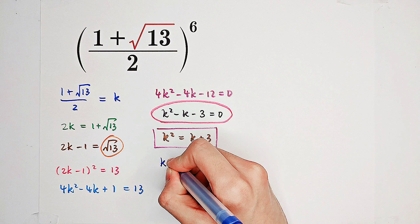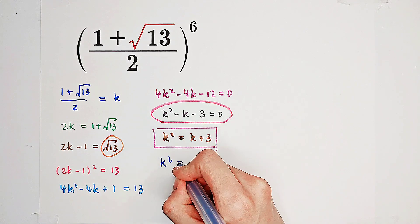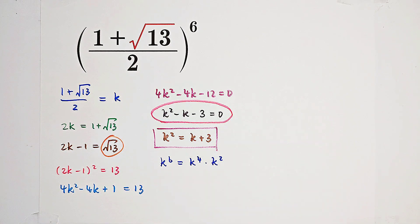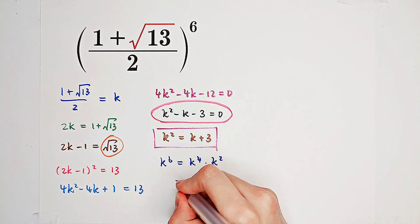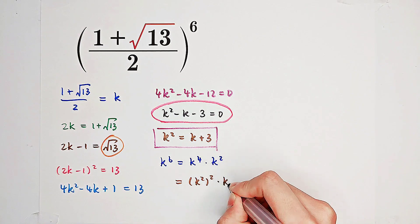So now, look, we have to calculate k to the power of 6. And it is k to the power of 4 times k squared. And k to the power of 4 is of course k squared, then squared, isn't it? Then times k squared.